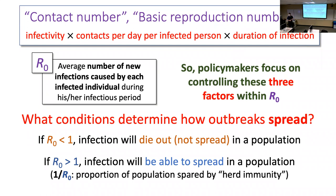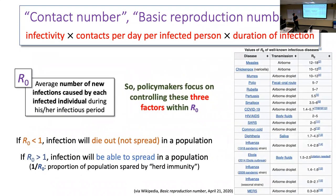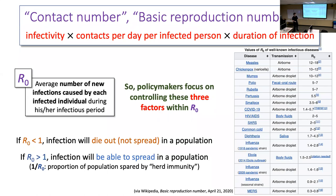R-naught only applies at the very beginning of a pandemic — once underway, the real-time measure is called Rt. Interestingly, this is directly related to forest fire modeling: a forest fire model can be built that looks exactly like the SIR model, and whether the fire spreads depends on tree density, with a critical density threshold that is mathematically identical to R-naught.